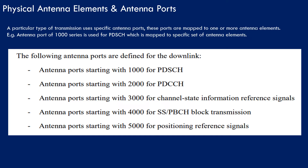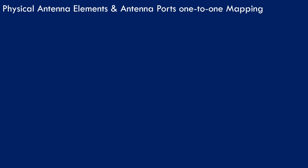3GPP defines an antenna port naming convention for different transmissions. For example, synchronization signals, PBCH, and PBCH demodulation reference signals all use antenna port 4000. All three transmissions share the same antenna port and are transmitted such that they experience the same propagation channel. Antenna port 4000 is mapped onto a specific set of physical antenna elements which radiate across the air interface.